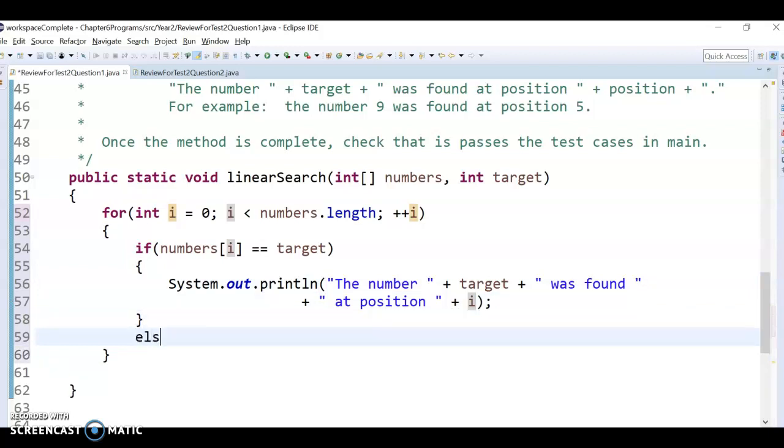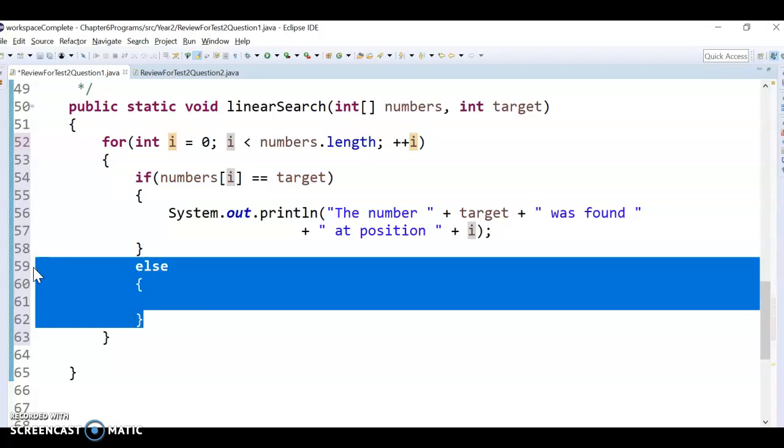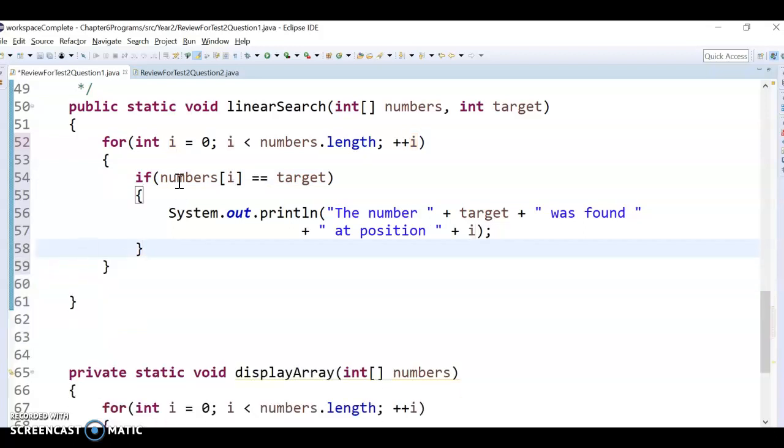Oftentimes students will want to do like an else here and say basically, hey, we didn't find it, but that's wrong because we would be checking only one position, right? We'd only be checking the first spot to see if it's equal to target and then saying we found it or we didn't, right? So we know we haven't found it once we've checked all the positions, right? For the target. And that doesn't happen until the for loop ends down here...